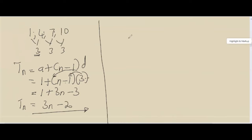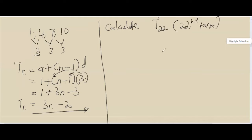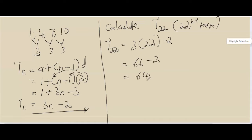There are mostly three types of questions expected from this. First, they might ask you to calculate T22. To find the 22nd term, substitute n=22 into Tn = 3n − 2: T22 = 3×22 − 2 = 66 − 2 = 64.